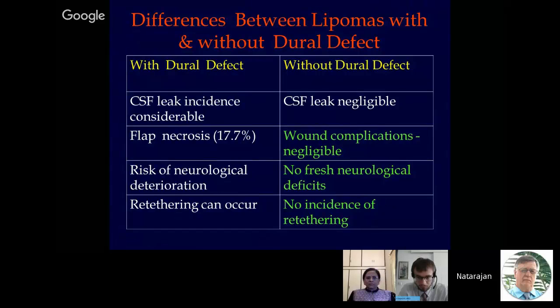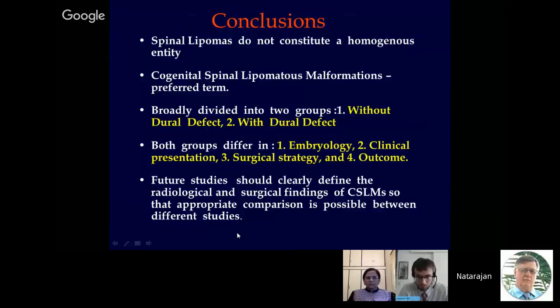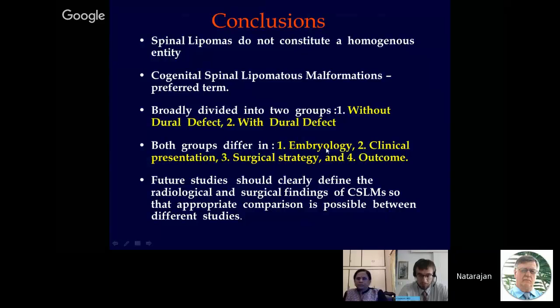Considering that spinal lipomas do not constitute a homogeneous entity, and as I mentioned, the term congenital spinal lipomatous malformation is the preferred term rather than lipomyelomeningocele or lumbosacral lipoma. They can be broadly divided into two groups — without dural defect and with dural defect — and these two groups differ from one another in embryology, clinical presentation, surgical strategy, and overall outcome. Future studies should clearly define the radiological and surgical findings of congenital spinal lipomatous malformation so that appropriate comparison is made possible between different studies. That will be all. Thank you.